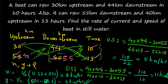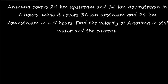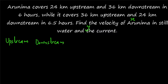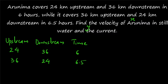Let's do one more problem. Second question: Arunima rows 24 kilometers upstream and 36 kilometers downstream in 6 hours, while she rows 36 kilometers upstream and 24 kilometers downstream in 6.5 hours. Find the velocity of Arunima in still water and the current — the same kind of question. X is the velocity in still water and Y is the speed of current. Form a table: upstream, downstream, time — 24 km, 36 km in 6 hours; and 36 km, 24 km in 6.5 hours.